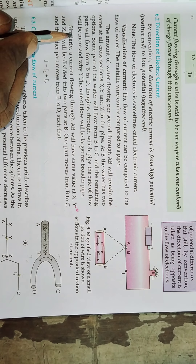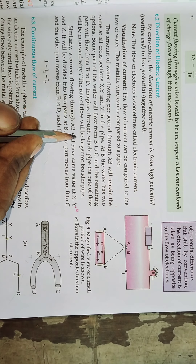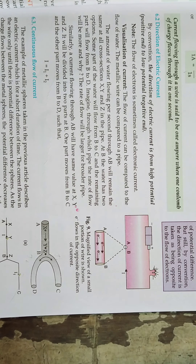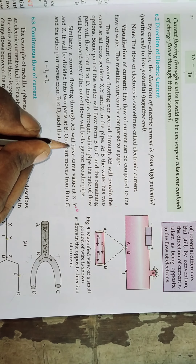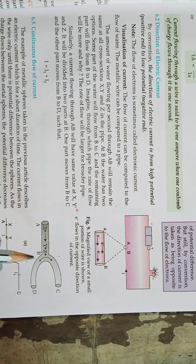At point B, the water has two options — it has two routes. Some parts of the water will flow B to C, and the remaining parts will flow B to D. Imagine through which pipe the rate of flow will be more and why.